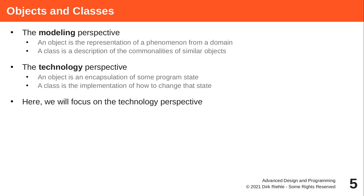When talking about objects and classes, there are two separate perspectives that inform how you structure your code. You need a clear understanding of whether you are talking about the real world you're modeling, or how to efficiently implement something with a computer. That's the difference between the modeling perspective — representing the real world or problem domain in code — versus efficient implementation, the technology perspective.